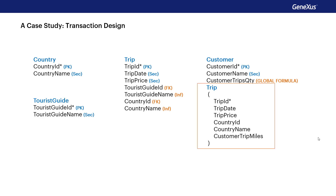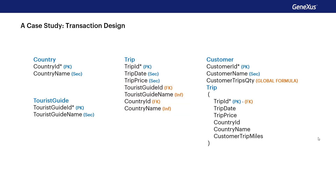At the second level, TripID is the primary key but also a foreign key. We see TripDate, TripPrice, CountryID, and CountryName. Looking at the Trip transaction structure, these attributes are present there — they are all inferred from the value of TripID. This means that in the second level of Customer, these attributes are inferred by the TripID value. CountryID was a direct foreign key stored in Trip and is now an inferred foreign key at this second level of Customer. CustomerTripMiles is a secondary attribute of this level.